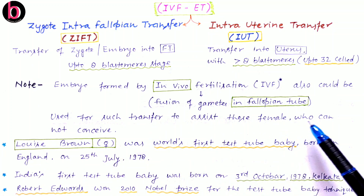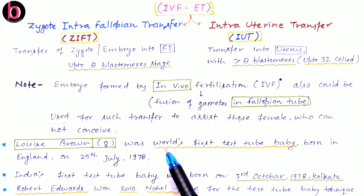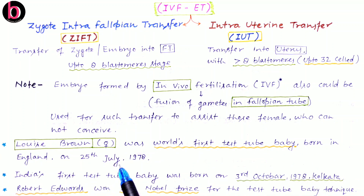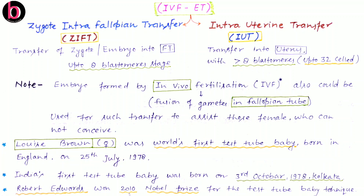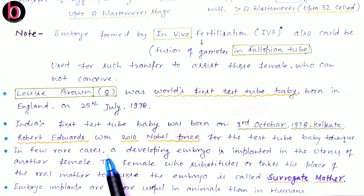Embryo transfers can also assist females who cannot conceive on their own. Louise Brown was the world's first test tube baby, born in England on 25th July 1978. In India, the first test tube baby was born on 3rd October 1978 in Kolkata and was named Durga. Robert Edwards won the 2010 Nobel Prize for the test tube baby technique and was associated with the birth of Louise Brown.